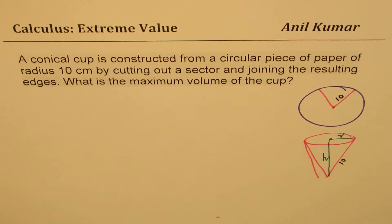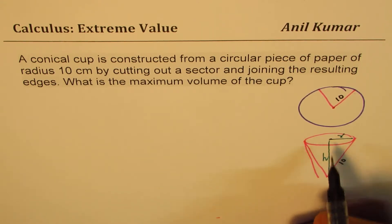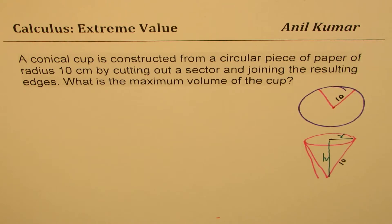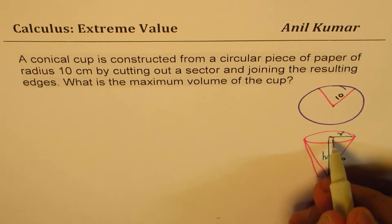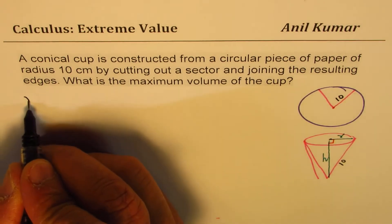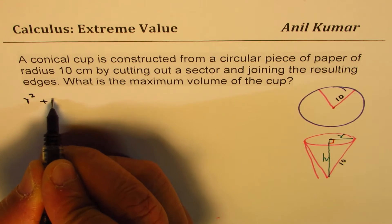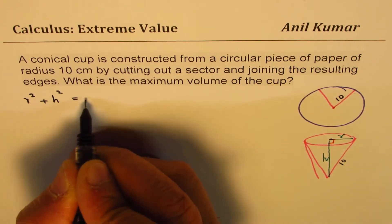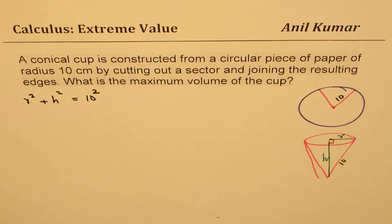We need to somehow relate R and H and find the maximum volume of this cup. I hope the question is clear — you can pause the video, answer, and then look into my suggestions. Now R and H can be related because this is a right triangle, so we can use the Pythagorean theorem.